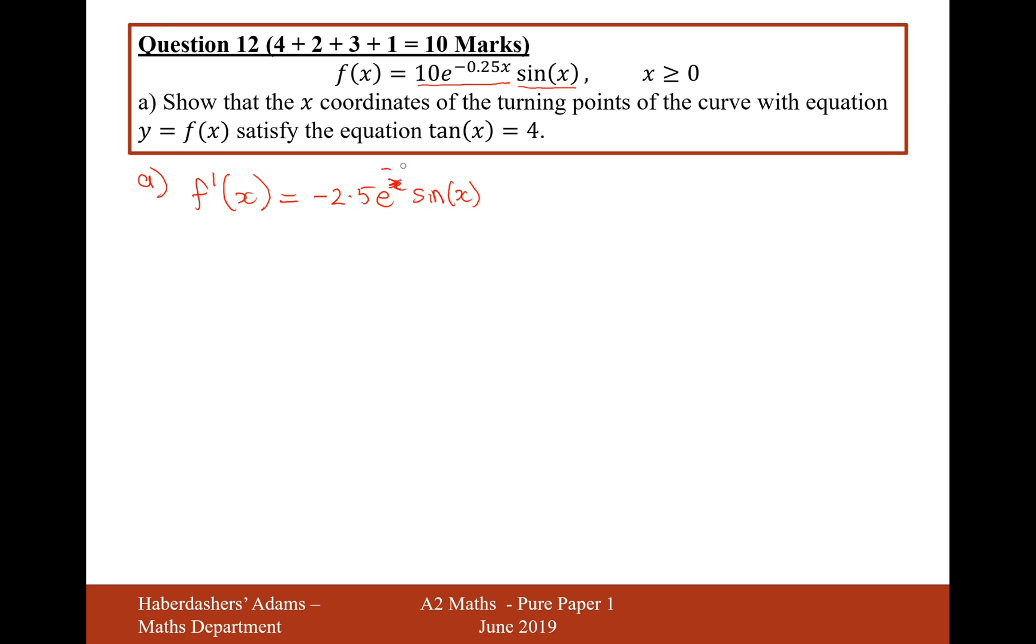Sorry, that's not e to the x, it's e to the minus 0.25x. The power stays on the e rather than just disappearing like I suggested it would. But then we're on to this next bit, which is plus 10e to the minus 0.25x cos x, because sin differentiates to cos.